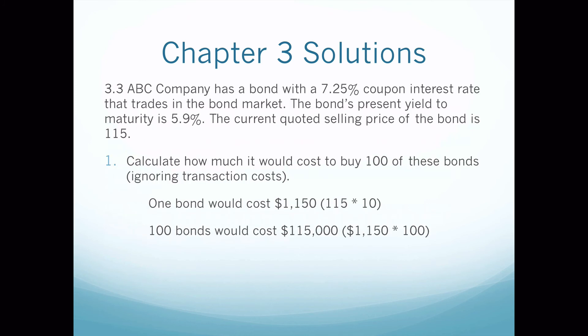Going back to PE ratio: the PE ratio in the textbook is 36, so you take 17.86 divided by 36 and you get $0.49 earnings per share. Moving on to problem 3-3: we have a bond with a coupon of 7.25% and a yield to maturity of 5.9%, and the bond is selling at 115 as stated in the journal. First thing: take that yield to maturity of 5.9%, put a line through it — you just need to know what it is, no calculations needed. For the cost of 100 bonds: take 115 times ten to get $1,150 per bond.